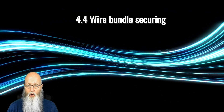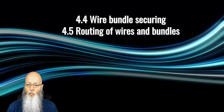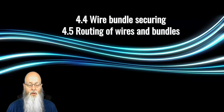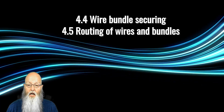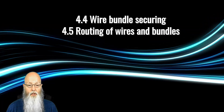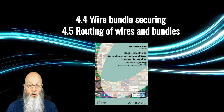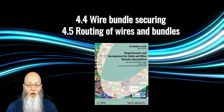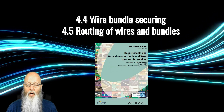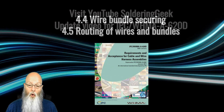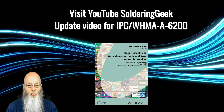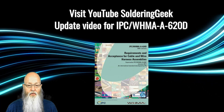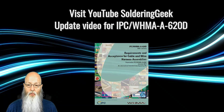Another removal from the document happened in 4.4, Wire Bundle Securing, and 4.5, Routing of Wires and Bundles. These sections have been taken out of the 610. The document user is instead referred to the IPC/WHMA A-620 Requirements and Acceptance for Cable and Wire Harnesses document. For more information about the changes in the 620, take a look at the Best Incorporated video for the update from 620C to 620D.